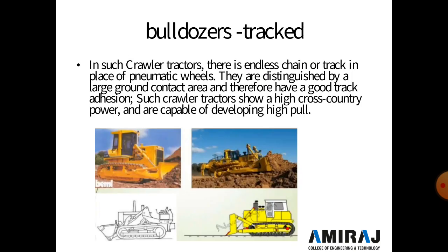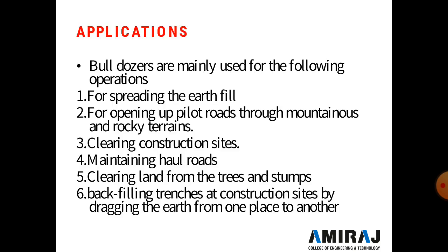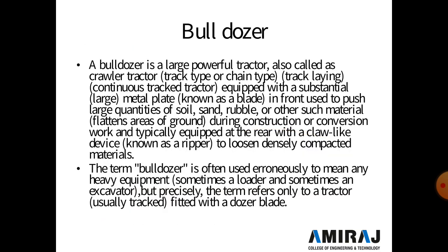The next type of equipment is the bulldozer, used for excavating material. A bulldozer is a large, powerful tractor — also called a crawler tractor — available in track type and chain type. It is equipped with a substantial metal plate known as a blade in front, used to push large quantities of soil, sand, rubble, or other material during construction. It is typically equipped at the rear with a crawler-like device known as a ripper to loosen densely compacted material.